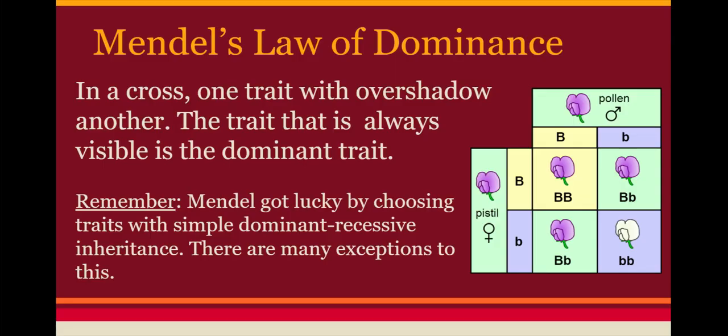Since we're going to be bending Mendel's law of dominance, let's do a quick review. Mendel said there are two alleles or versions of every gene, and one will always overshadow the other. In your two chromosomes, one recipe, if present, will always get transcribed and translated — meaning you'll always make that protein and always see it in the phenotype. That is what we call the dominant trait.